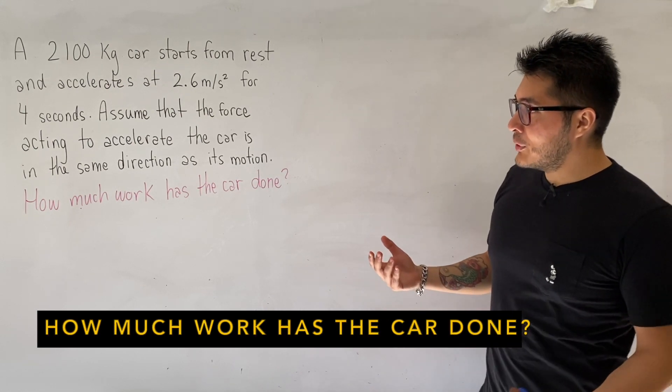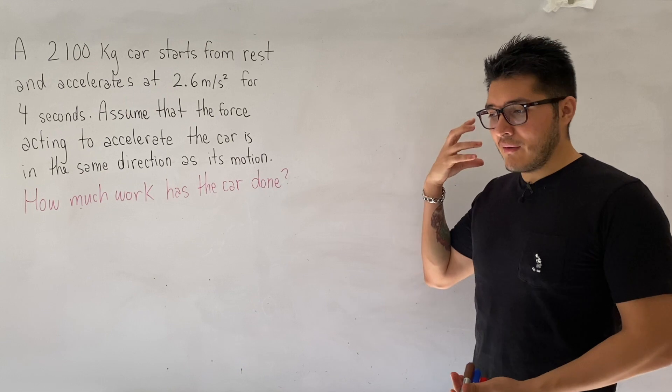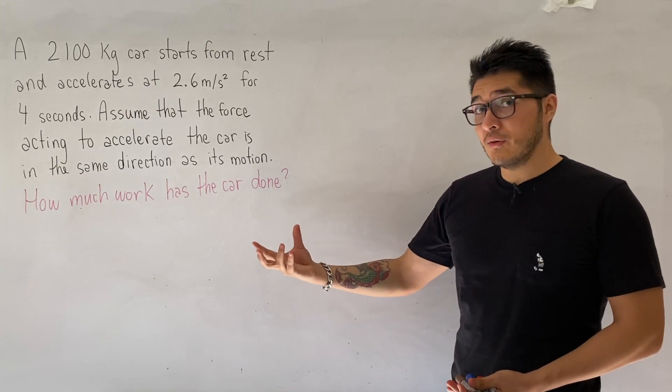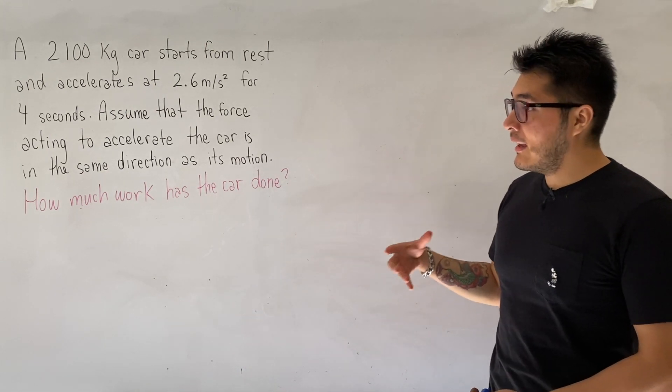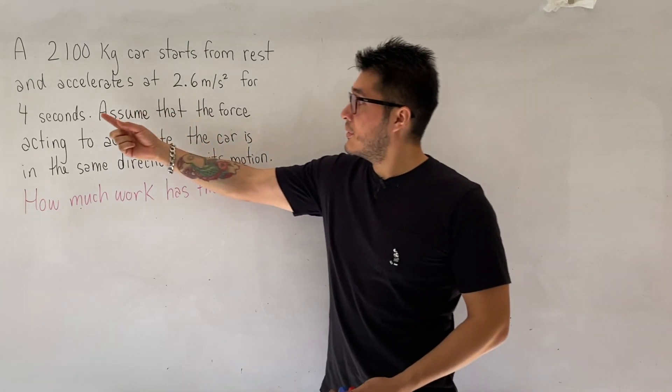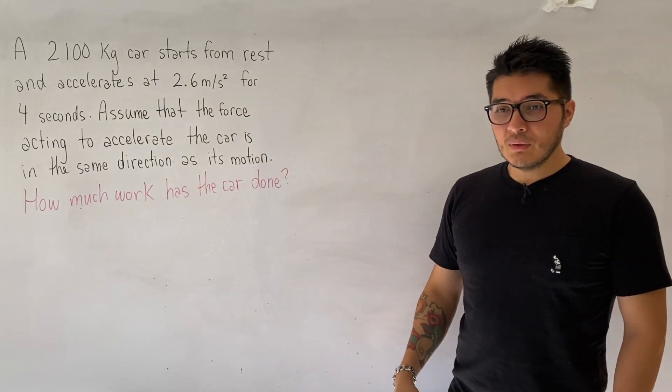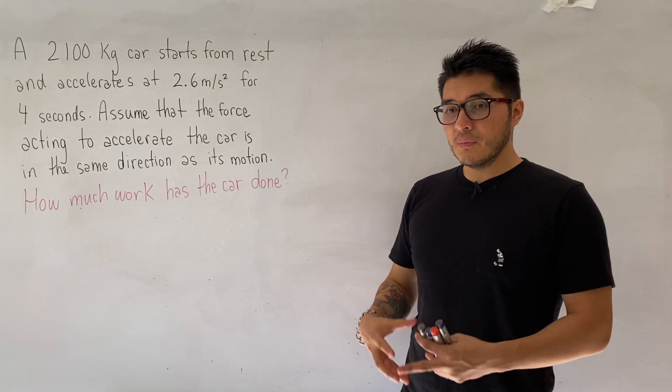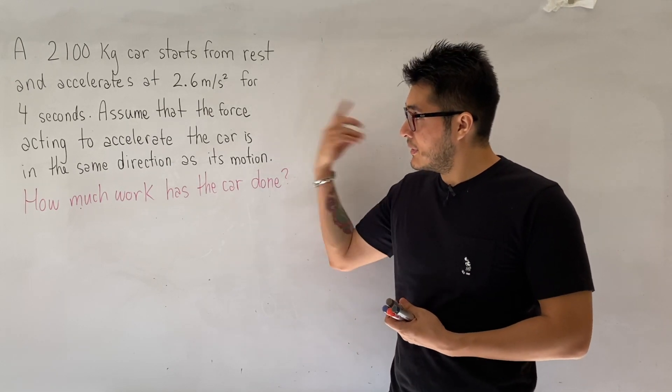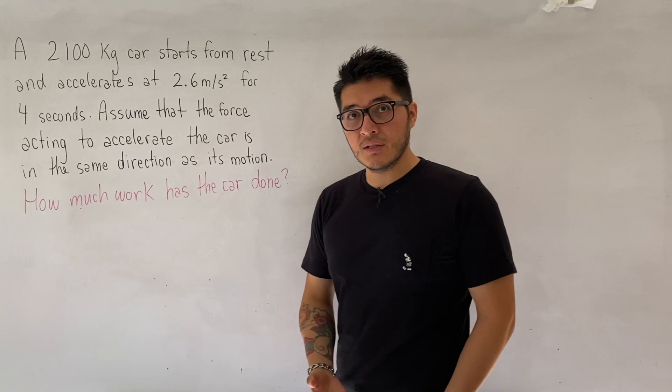All right, so this is a pretty easy question if you think about it. We have a car, it starts from rest and it begins to move. In other words, it accelerates and it accelerates for a period of 4 seconds. So how much energy was required in order to make this car move with this much acceleration for that duration of time?